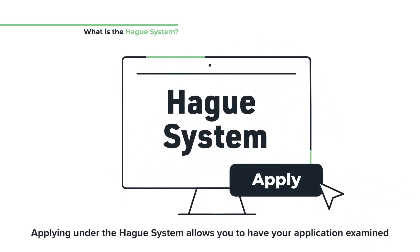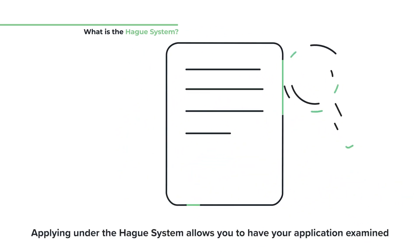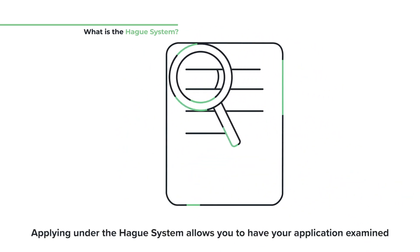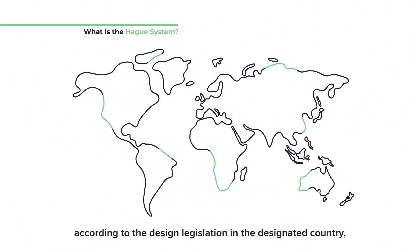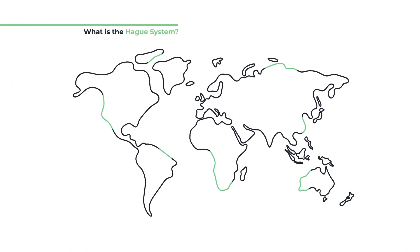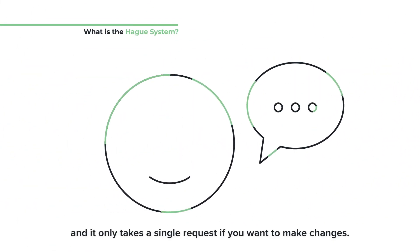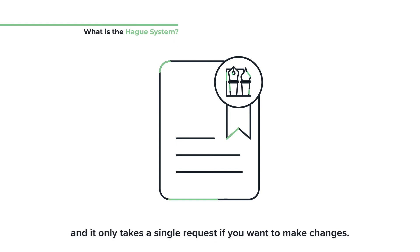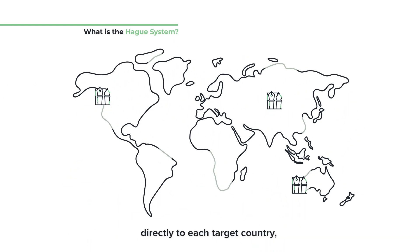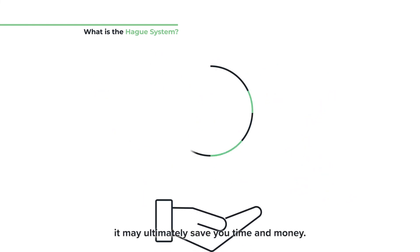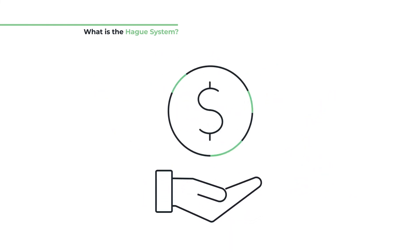Applying under the Hague System allows you to have your application examined according to the design legislation in the designated country, and it only takes a single request if you want to make changes. Because you don't have to file multiple applications directly to each target country, it may ultimately save you time and money.